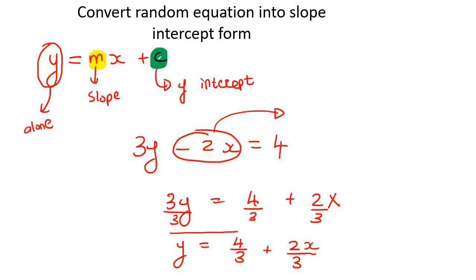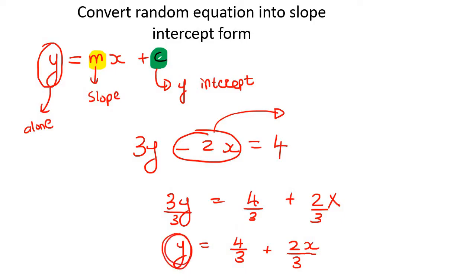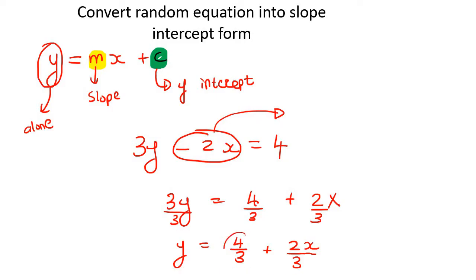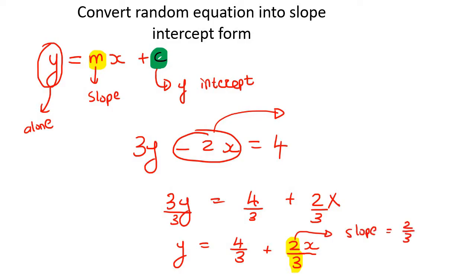Now we can call this slope-intercept form because the y is completely by itself. If they ask you what the slope is, don't say 4 over 3 — the slope is always the one that is in front of the x. So your slope would be 2 over 3, and then your y-intercept would be 4 over 3.